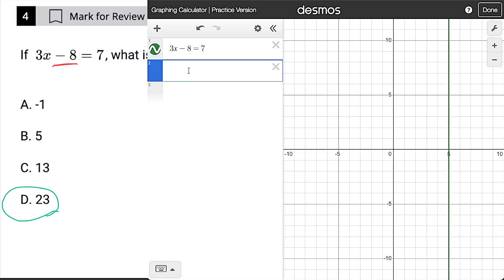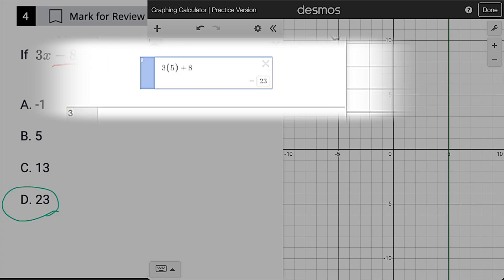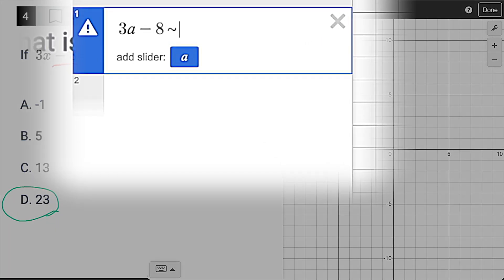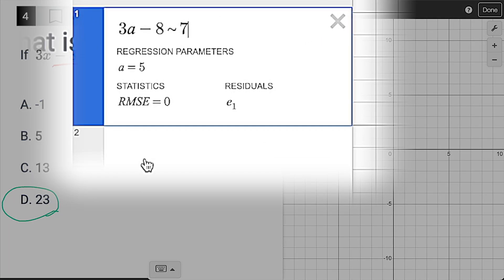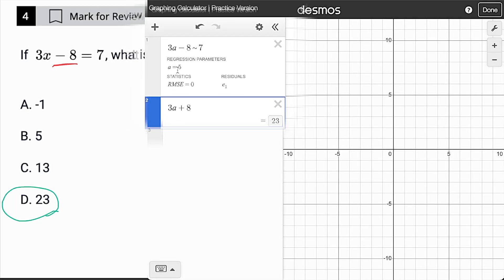So then you could do like 3 times 5 plus 8. But what's really cool, I mean, it's going to give you your answer, right? But what's really cool is if you switch x to some sort of a variable, you could either say 3a, instead of using equals, you use the tilde. Now, if you type in 3a plus 8, it's going to just give you your answer because it's saved that value for a.